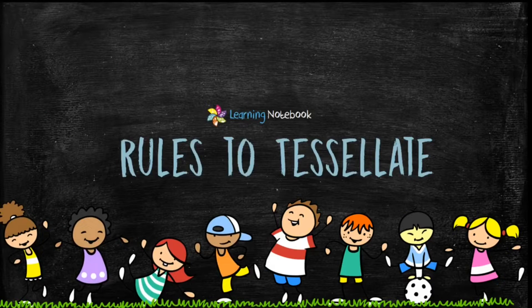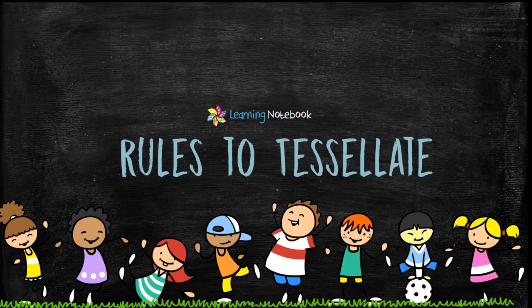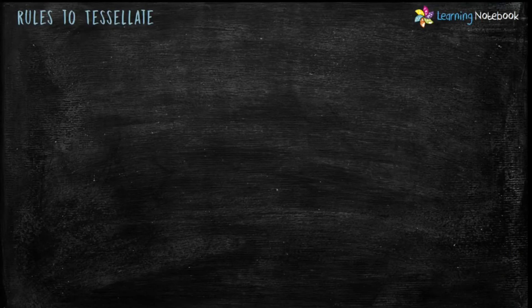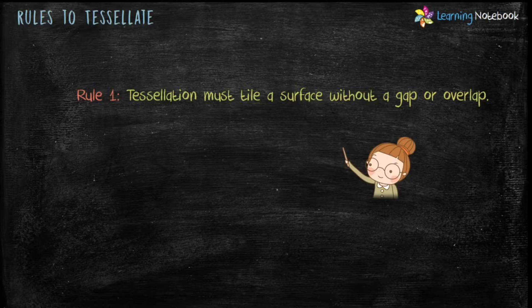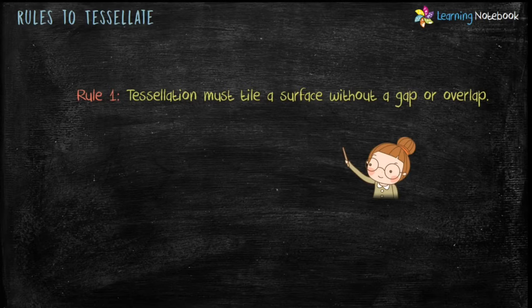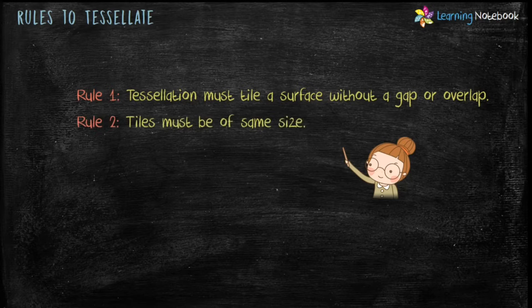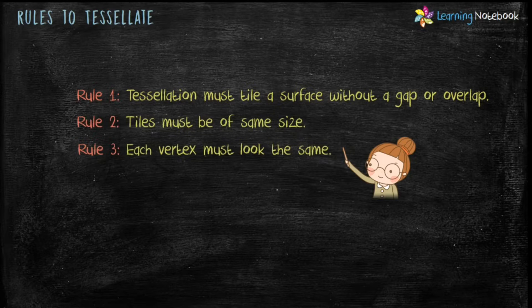Let's understand rules to tessellate. Rule number 1 is tessellation must tile a surface without a gap or overlap. Rule number 2 is tiles must be of same size. And third rule is each vertex must look the same.